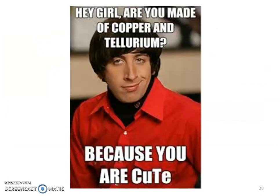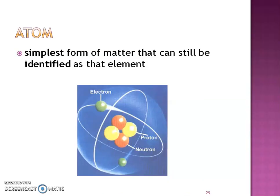Pause the video, fill in the blanks, and then play to hear my words. The best definition I've ever found is that the atom is the simplest form of matter that can still be identified as that element. Once you get smaller than an atom, you are no longer identifying that element as that element — now it's become something else. I really like this definition of an atom.